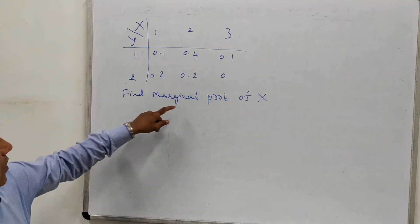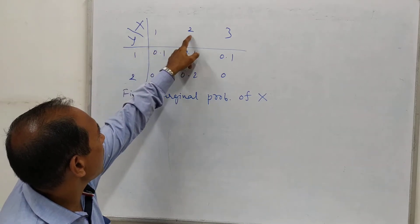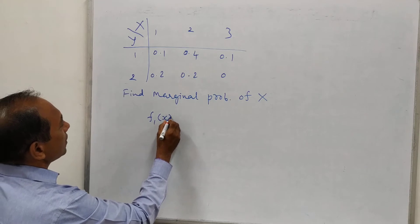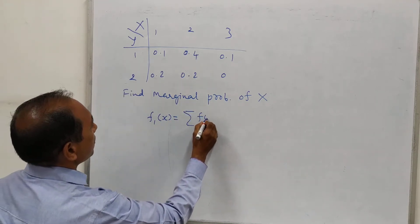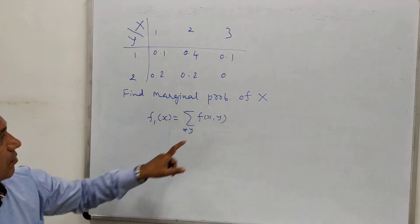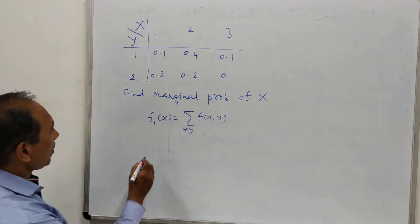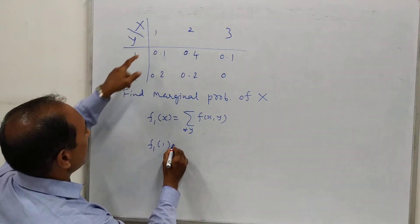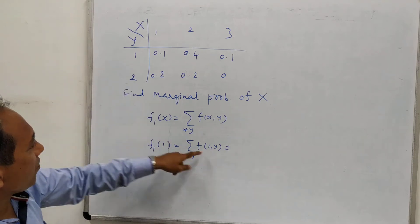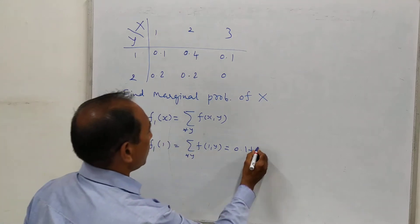The marginal probability of X is to be found for each value of X, that means for x equal to 1, x equal to 2, and x equal to 3. The formula is f1(x) equals sigma f(x,y) for all y, because x is kept fixed and y varies over all its allocated values. For example, if we want to find f1(1) for x equal to 1, then f1(1) equals f(1,1) plus f(1,2), which is 0.1 plus 0.2, giving us 0.3.